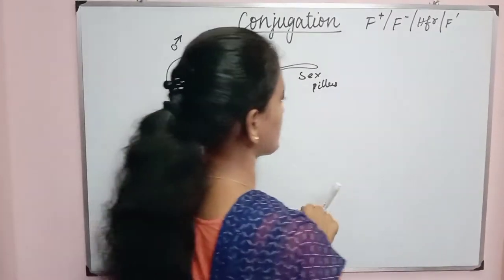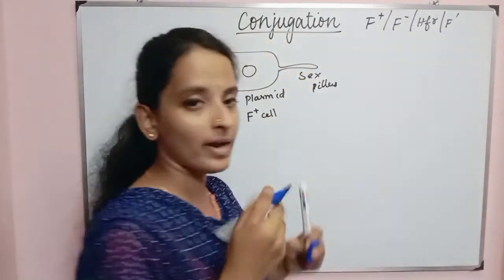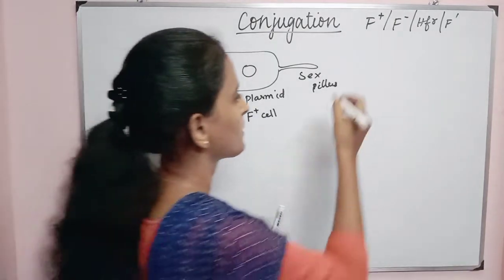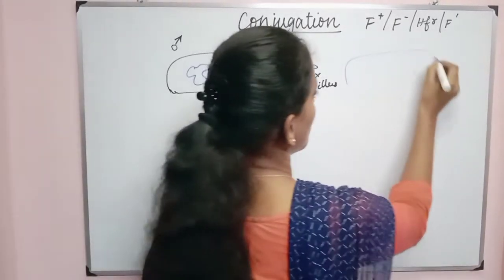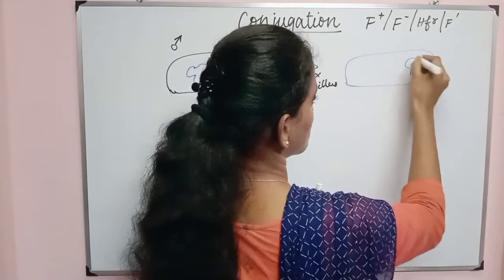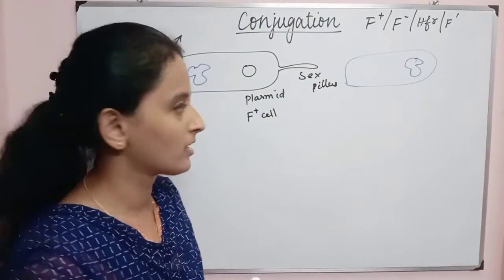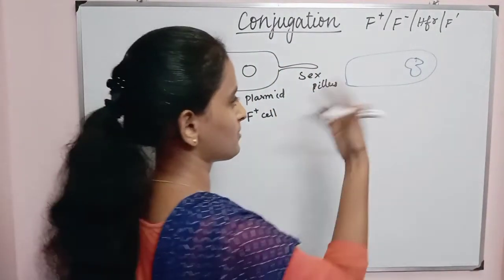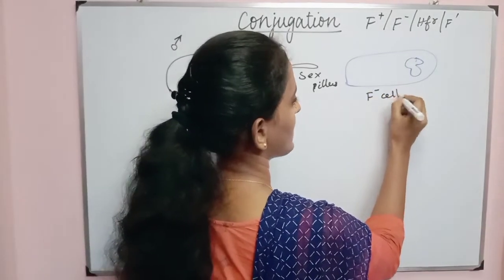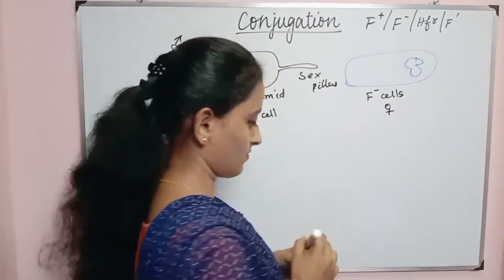If you have a bacterium that has the F plasmid, it is an F+ cell. Another bacterium that contains only chromosomal DNA without the F plasmid — that cell is called an F- cell. So this is the female cell.